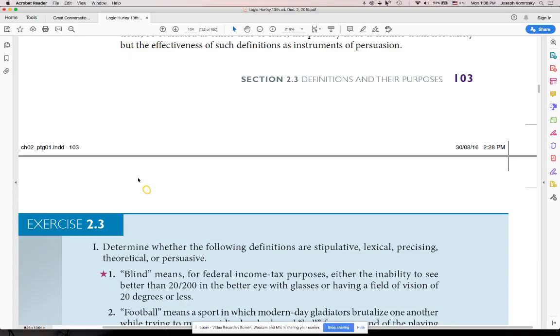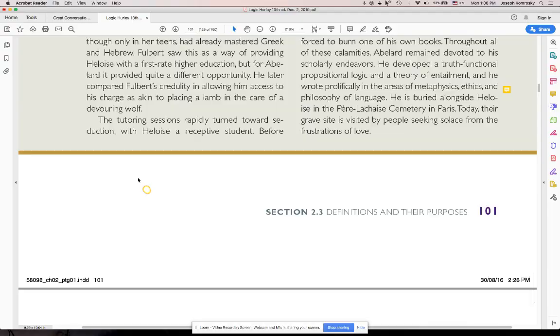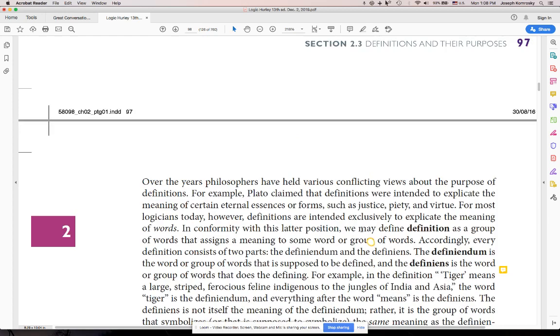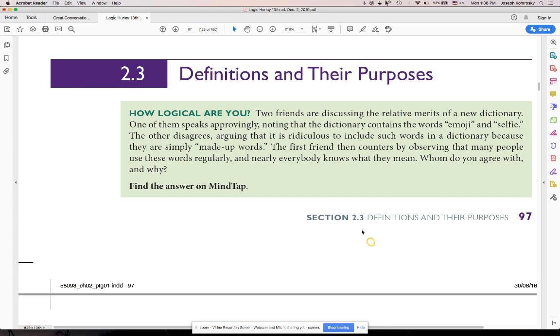And that's pretty much it. So you have persuasive, you have theoretical, you have precising, lexical, and stipulative. And then the easy distinction, definiendum, definiens. And that's pretty much it for this section. I think the homework should be super easy. What's the point of all this? This is just a different layer in getting you to realize what you're doing when you're talking with people using definitions and how you're using them.